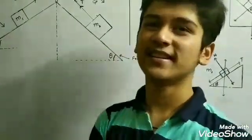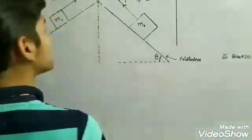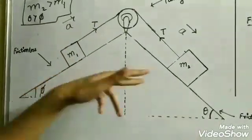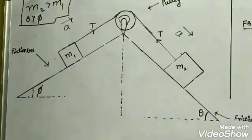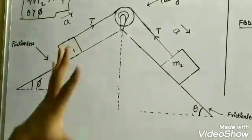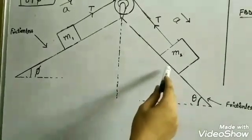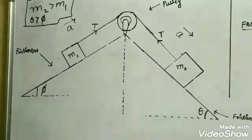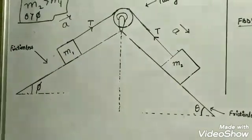Welcome back to my channel. In this video I have another problem on pulleys. In the diagram we can see a pulley and two blocks of masses m1 and m2 attached to this pulley with a rope. Both of these blocks are resting on inclined planes. The plane of m1 is inclined at an angle of phi and the plane of the second block with mass m2 is inclined at an angle of theta. We have assumed the surfaces to be frictionless.